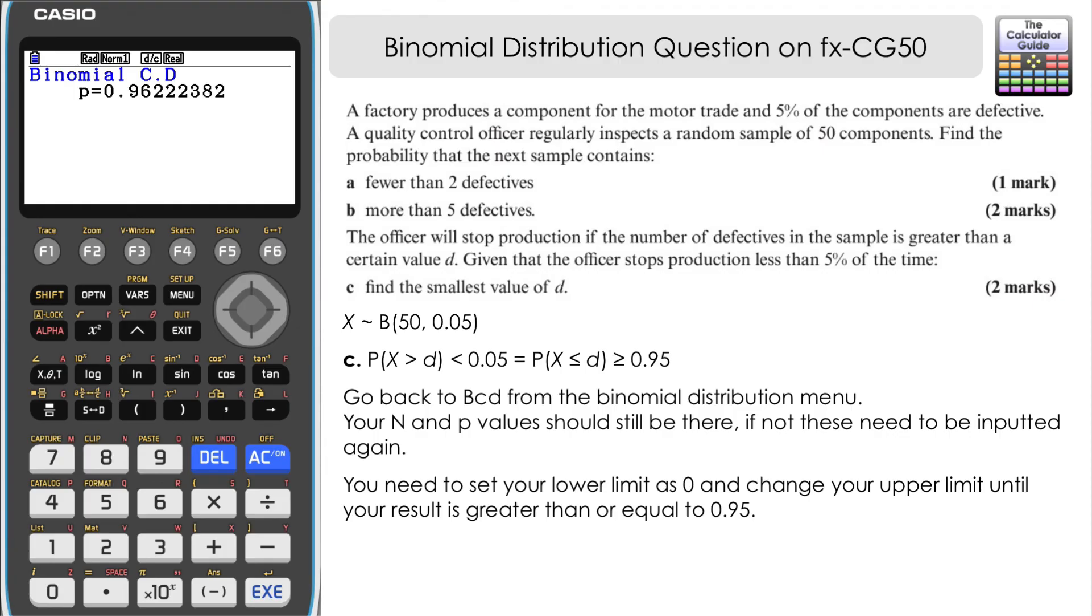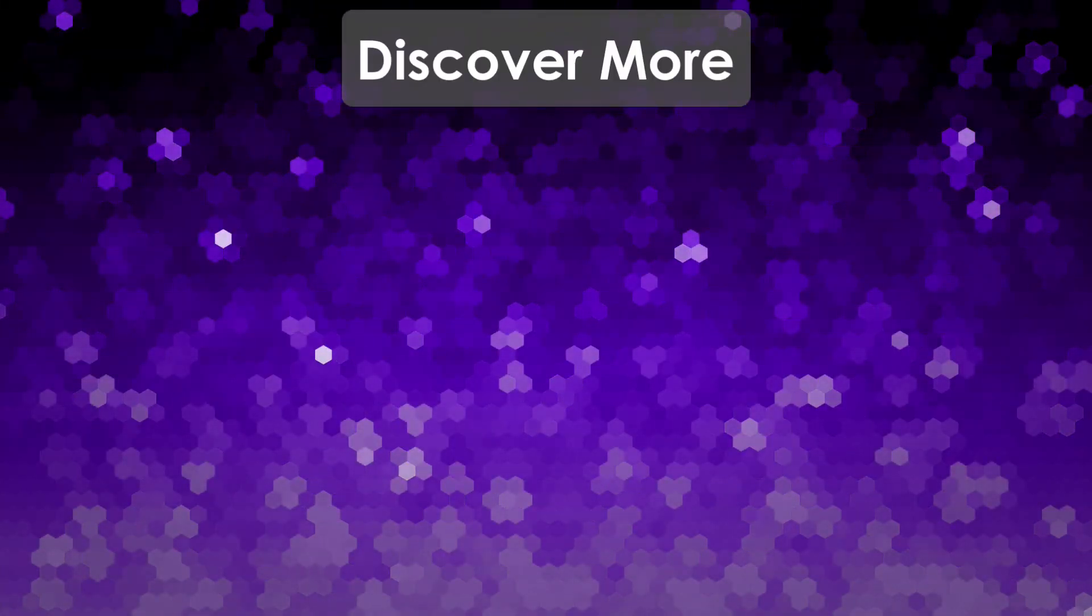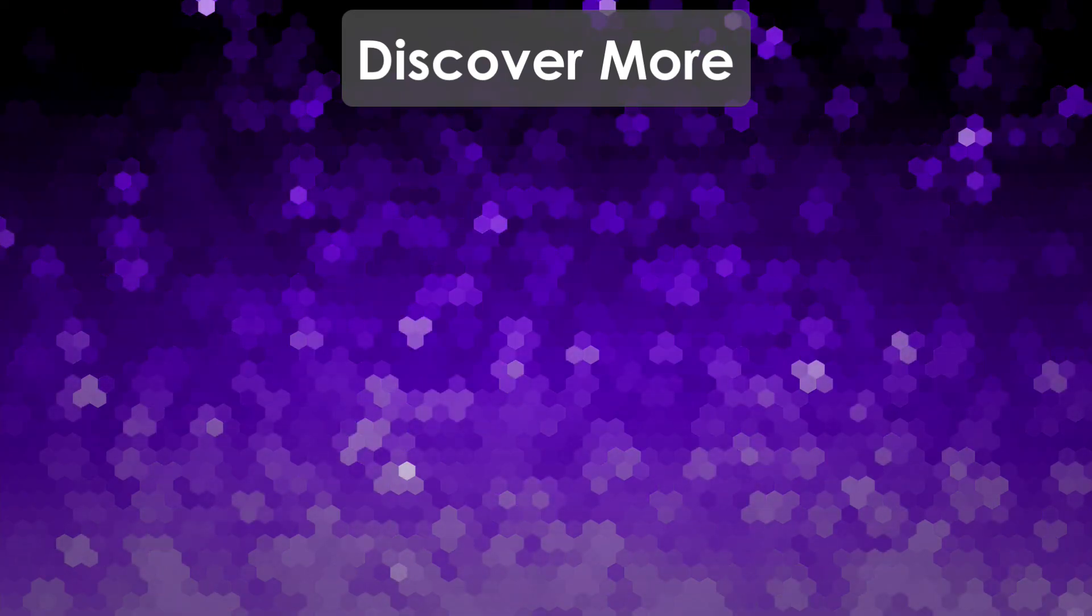So we can find it. We can find this value of D by using a trial and error method. If we don't have inverse binomial, obviously a little bit more convenient, a little bit quicker to use the CG50 inverse binomial to help us to find that. So there we go. A very good question from the Edexcel book there. And that's how we can use the CG50 to help us answer that particular question.